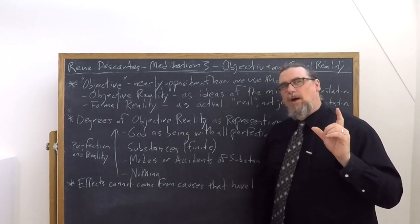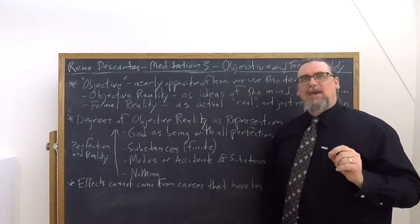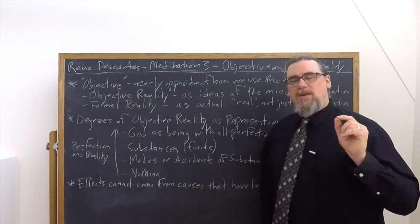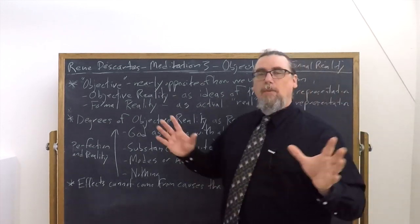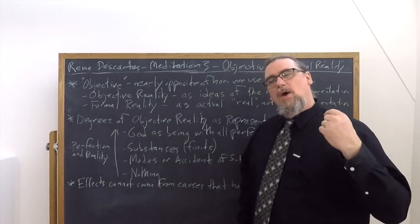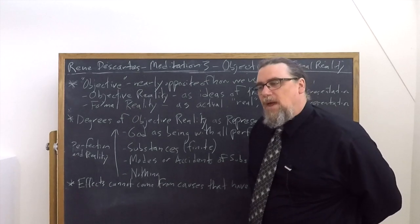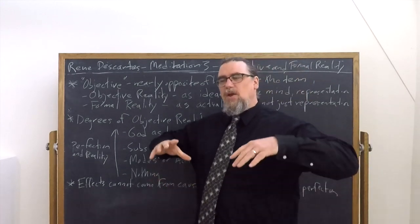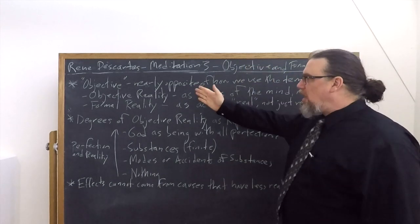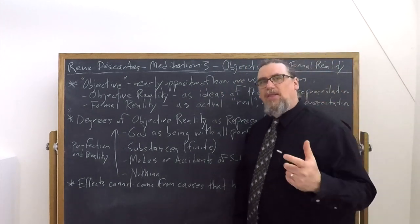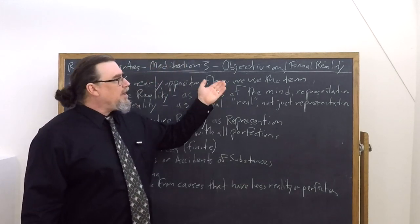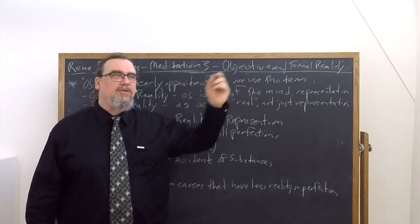Descartes means in some respects, almost the exact opposite. He is talking about what we would call subjectivity, but not a subjectivity that's pure arbitrariness or something to be dismissed because it only belongs to an individual. Rather, he is talking about objectivity or objective reality. If we want to be very clear, objective reality is the reality that things have as ideas in the mind.